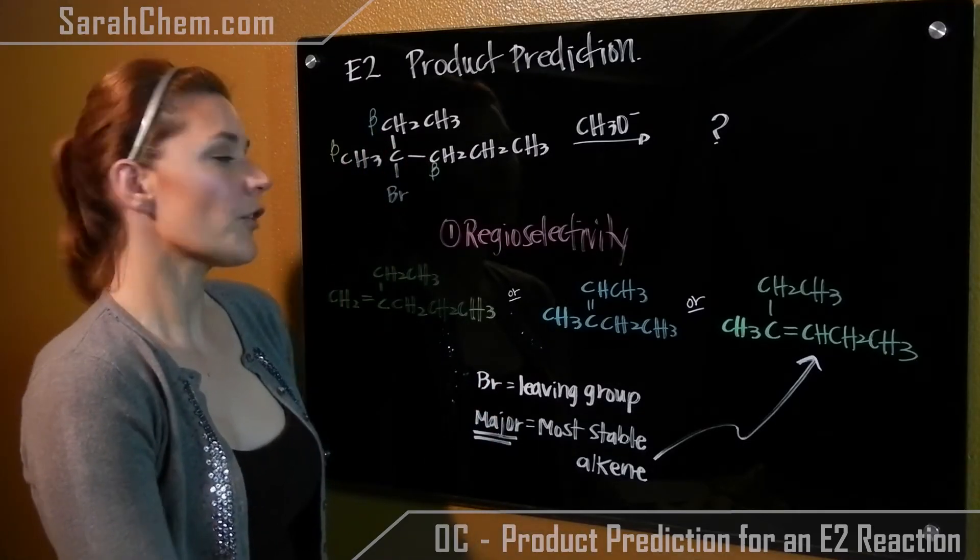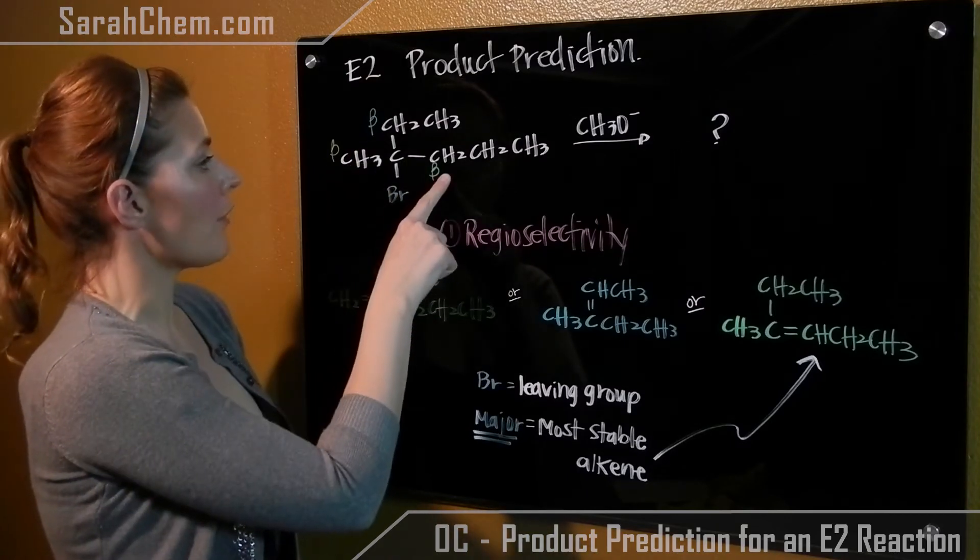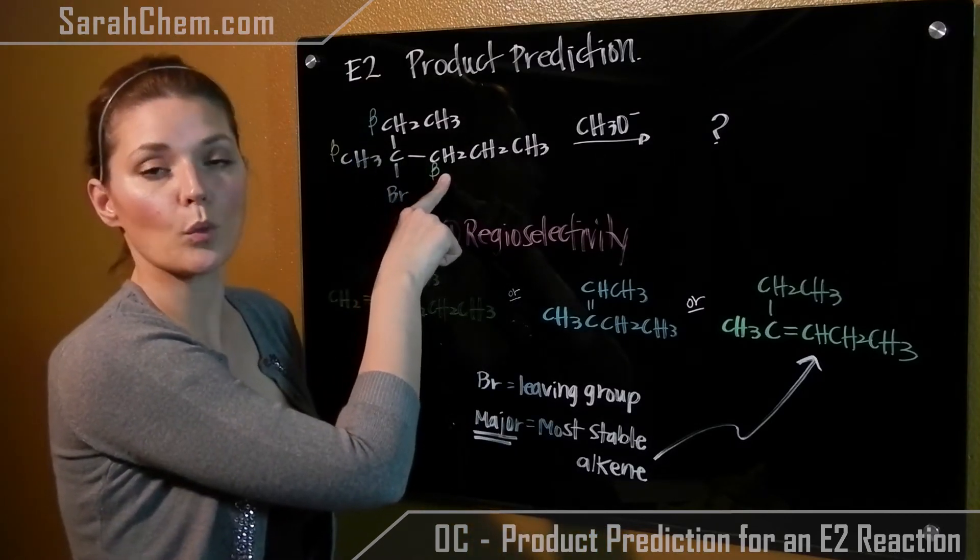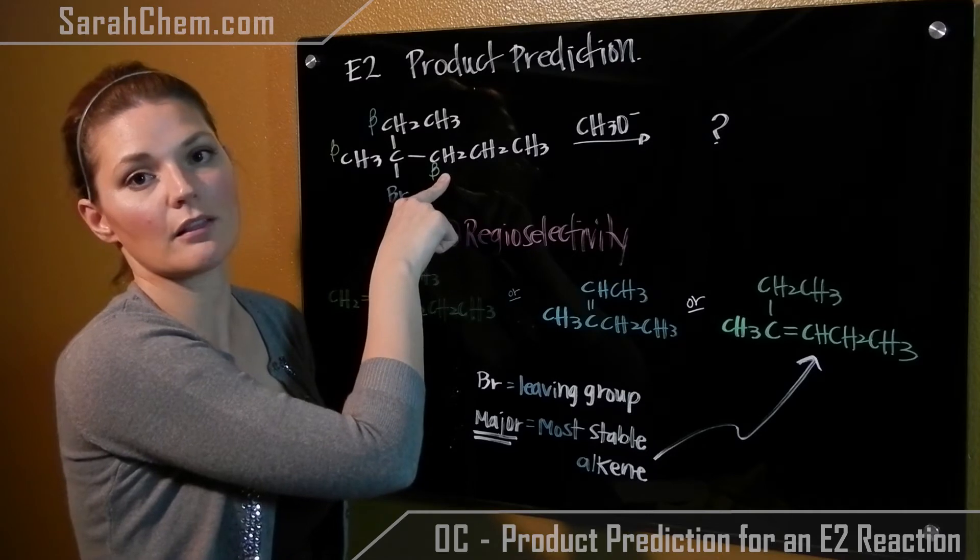I've color coded them for you, so the yellow, the blue, and the green beta. Each one would produce a different product if it lost the hydrogen.